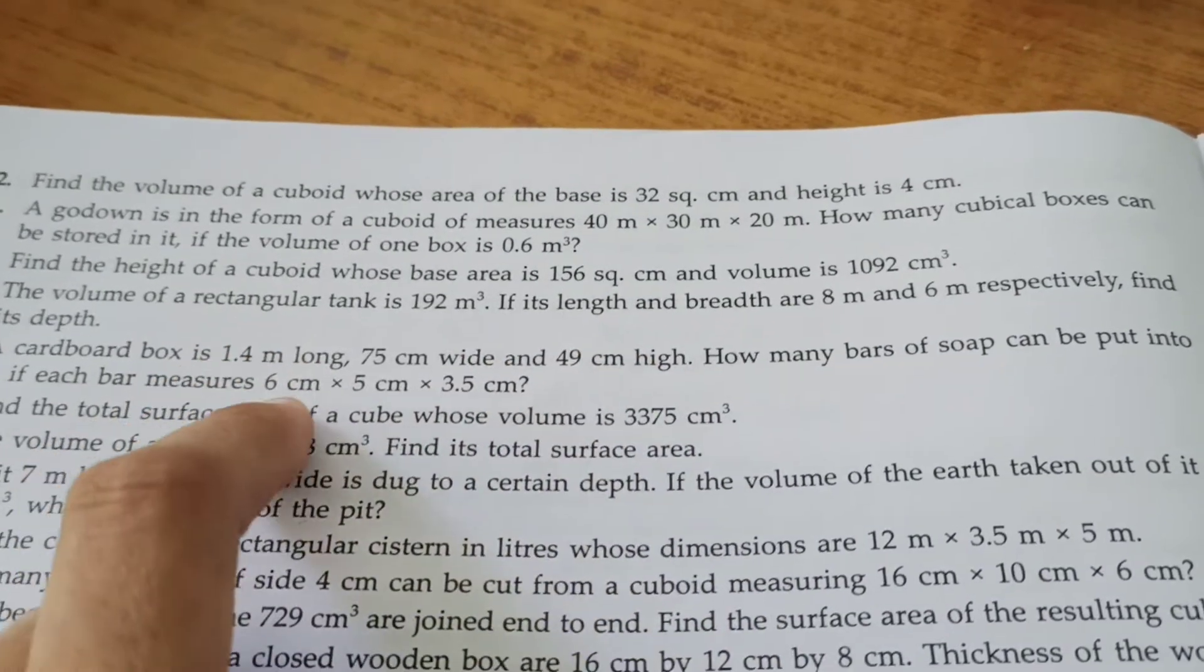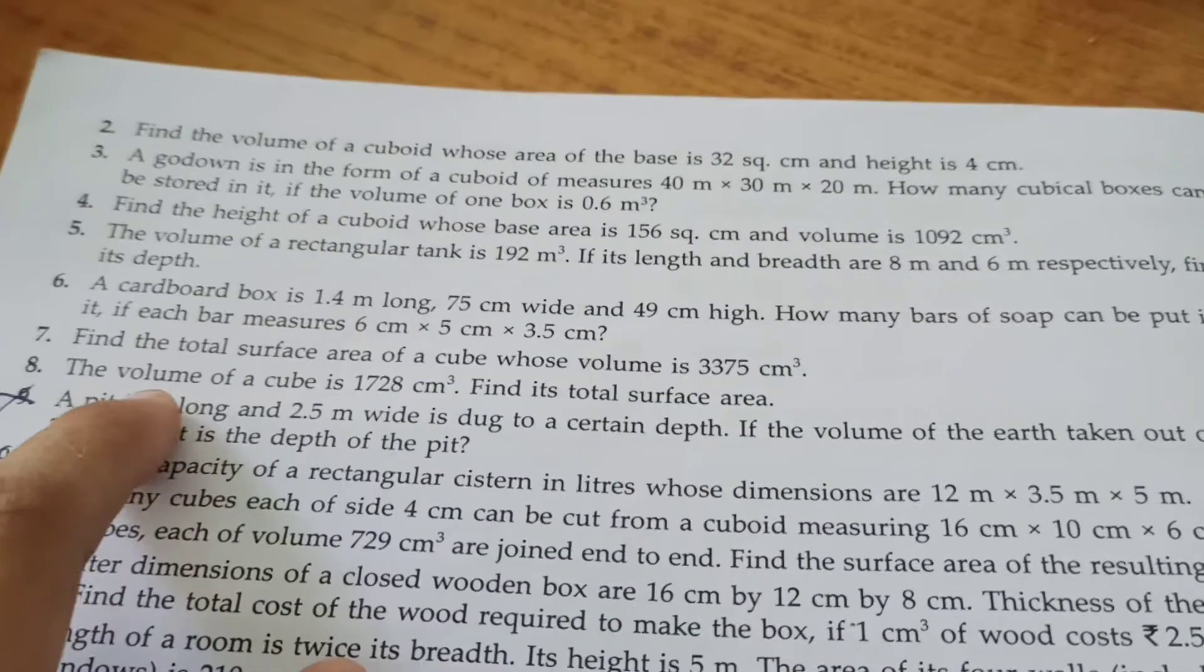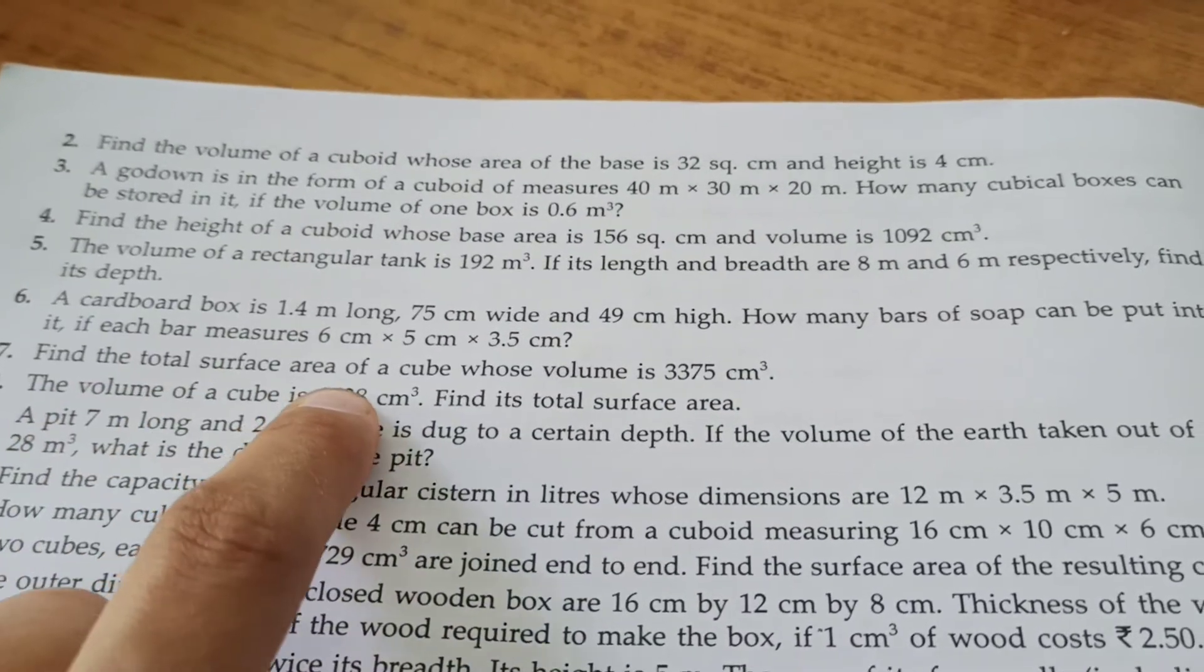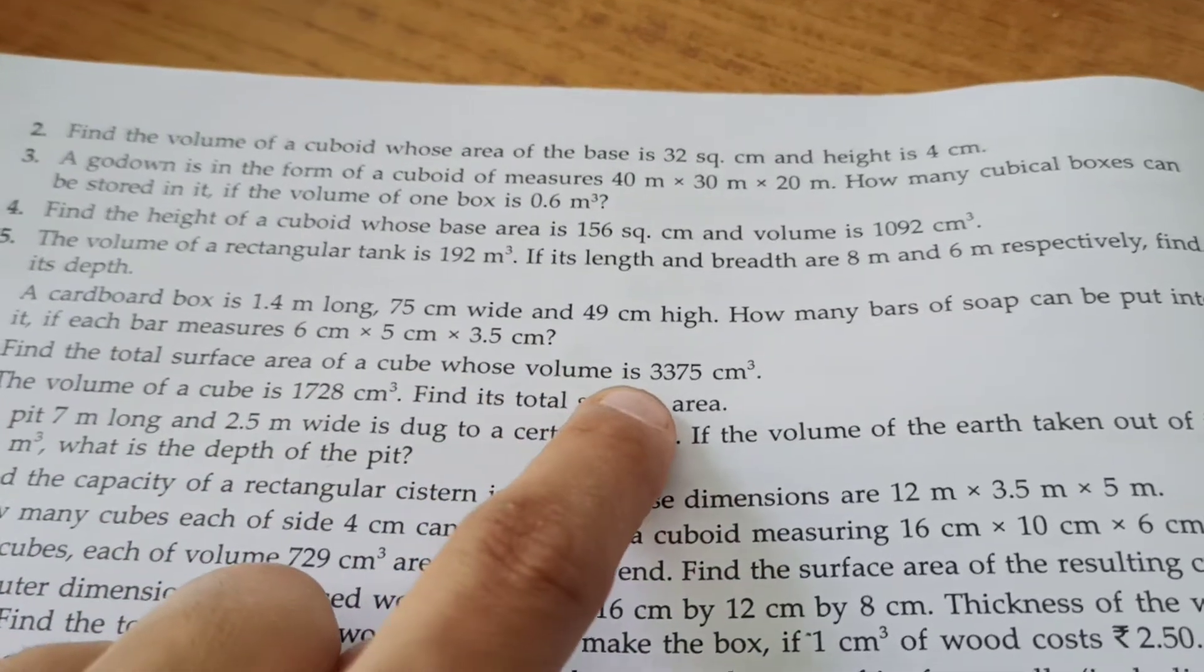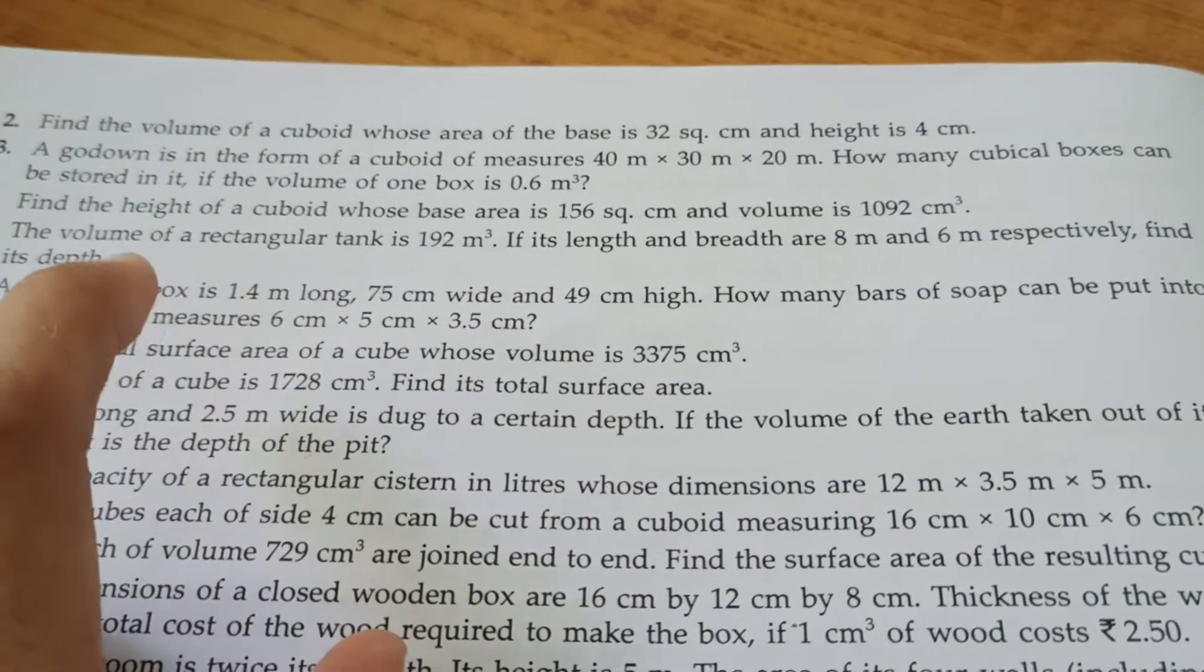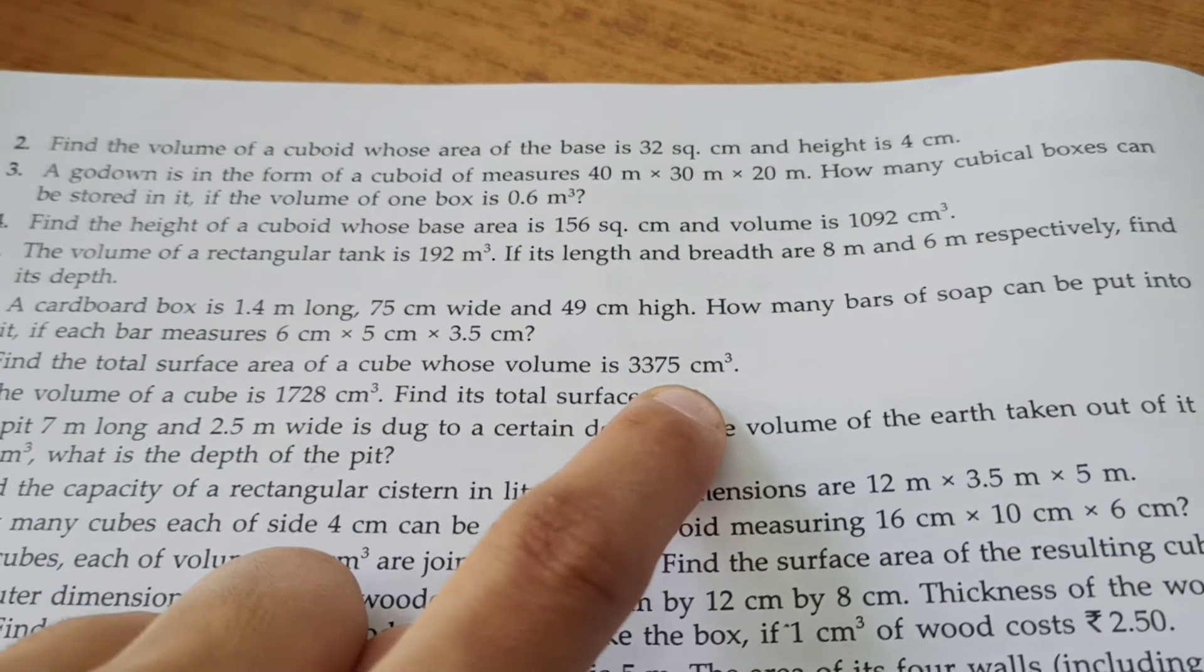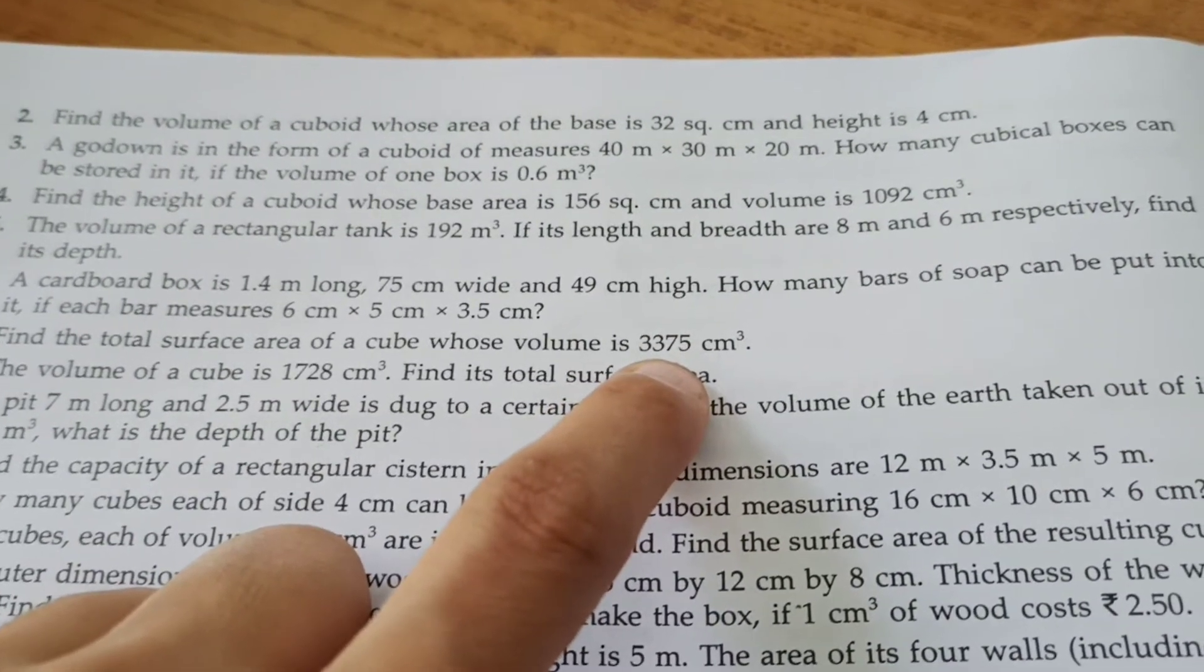Find the total surface area of a cube whose volume is 3375 centimeter cube. We need to find total surface area. Volume is given as 3375 centimeter cube, that means volume equals...